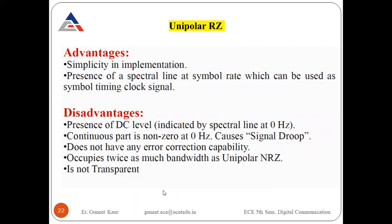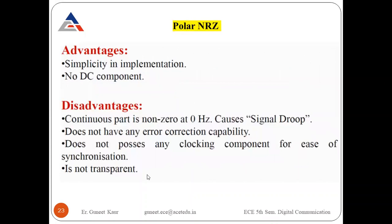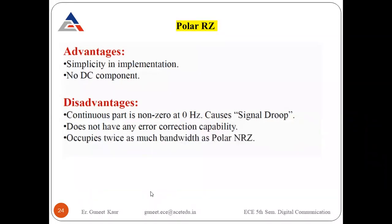For polar NRZ, the advantages are: simplicity in implementation and no DC component. The disadvantages are: the continuous part at zero Hz causes signal drop, no error correction capability, no clocking information is provided, and it is not transparent. Polar RZ has the same advantage of no DC component, but causes signal drop, has no error correction capability, and uses twice the bandwidth due to the return-to-zero property.